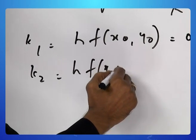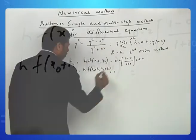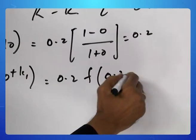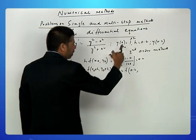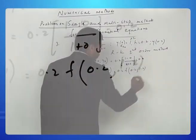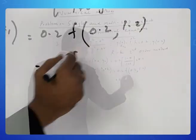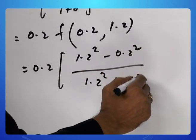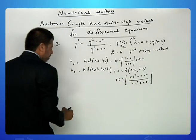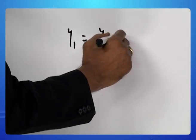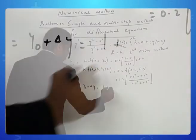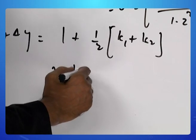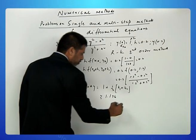k₂ = h·f(x₀ + h, y₀ + k₁). x₀ + h = 0 + 0.2 = 0.2, y₀ + k₁ = 1 + 0.2 = 1.2. So k₂ = 0.2·f(0.2, 1.2) = 0.2·(1.2² - 0.2²)/(1.2² + 0.2²). Then y₁ = y₀ + ½(k₁ + k₂), with y₀ = 1 and delta y = ½(k₁ + k₂). This approximately gives 1.196, which is option C.